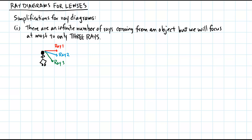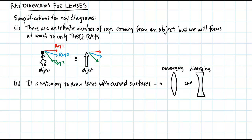We focus on the top of the head and say there are only three rays — ray one, two, and three. Since a person is difficult to draw, from now on all objects will be drawn as arrows.